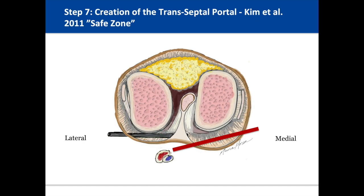In the early studies of the transeptal portal, there was no reported preference for the directionality of creating the portal, in terms of lateral to medial or medial to lateral. However, in 2011, Kim et al. demonstrated that the posteromedial compartment is consistently wider than the posterolateral compartment and suggested that the transeptal portal should be made in the posterolateral to posteromedial direction. This allows surgeons to have a wider safe zone, thus decreasing the chance of neurovascular injury.